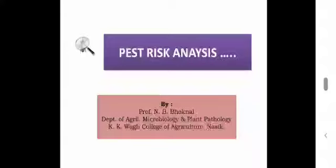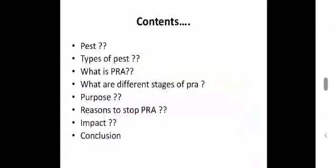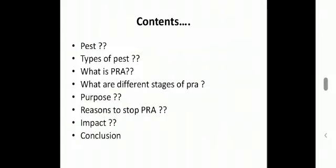In today's session, we will be discussing the topic PRA, that is Pest Risk Analysis. The contents include: what is PEST, what are different types of PEST, what is PRA, how to conduct it, what are the different stages of PRA, why to do PRA — that is the purpose — then when to stop PRA, that is the reasons, what is its impact, and lastly, the conclusion.